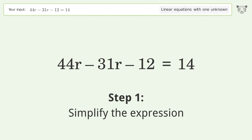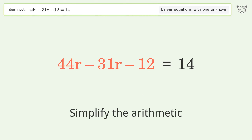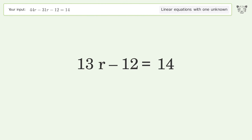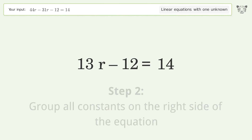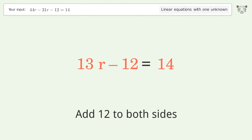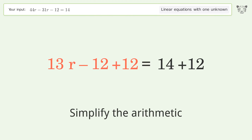Simplify the expression and simplify the arithmetic. Group all constants on the right side of the equation by adding 12 to both sides. Simplify the arithmetic.